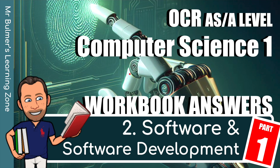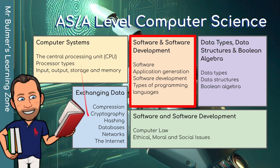Hello and welcome back to the second video for OCR AS and A-level computer science. These are the workbook answers. This is part two: software and software development. There's going to be two videos for this, and this is the first video. As you can see, it's made up of five different sections for the AS and A-level computer science. We're covering software, application generation, software development, and the types of programming language.